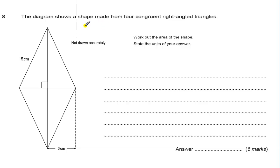So this question we are given a diagram that shows a shape that is made of four congruent right angle triangles. We are asked to work out the area of the shape and state the units to your answer. There will be one question that asks you to state the units. Because this is an area, because we are using centimetres, we get one mark for putting our answer as centimetres squared. So maybe we can do that to start with.